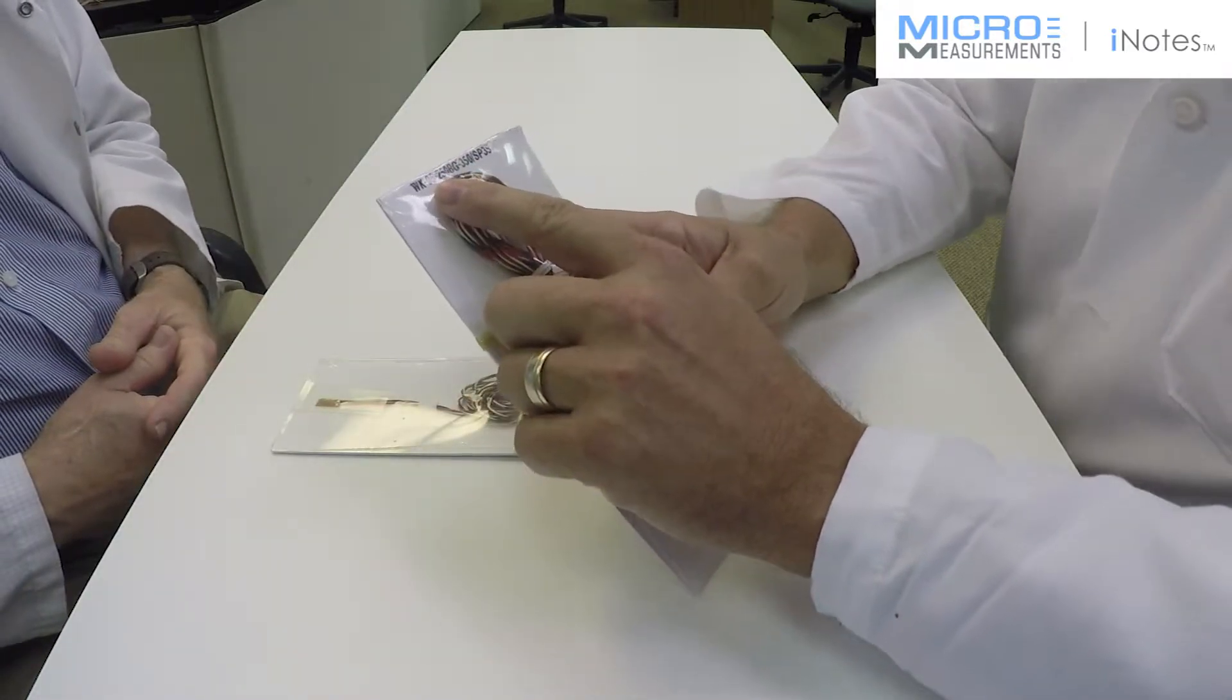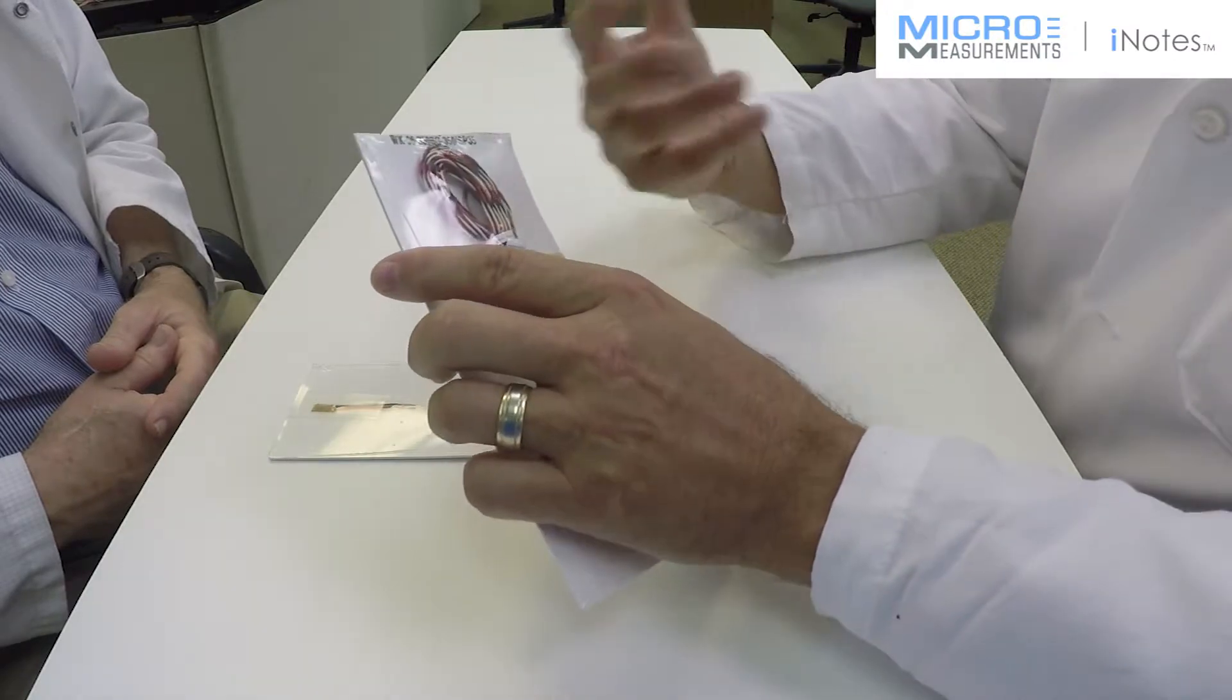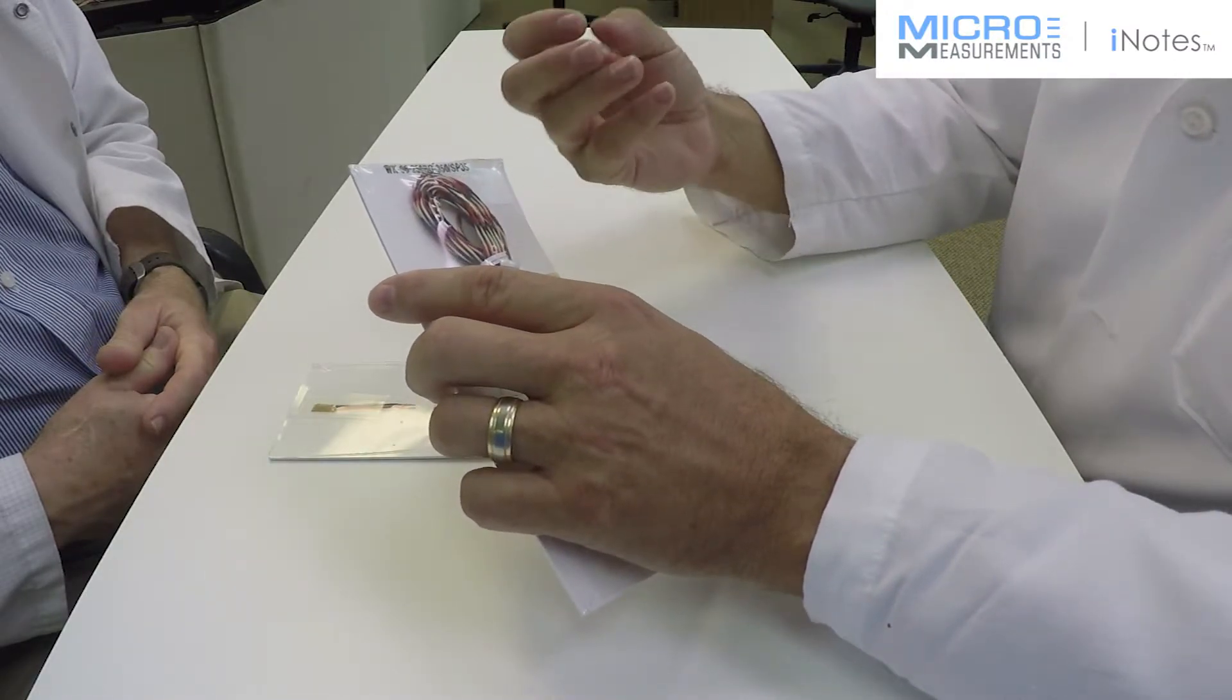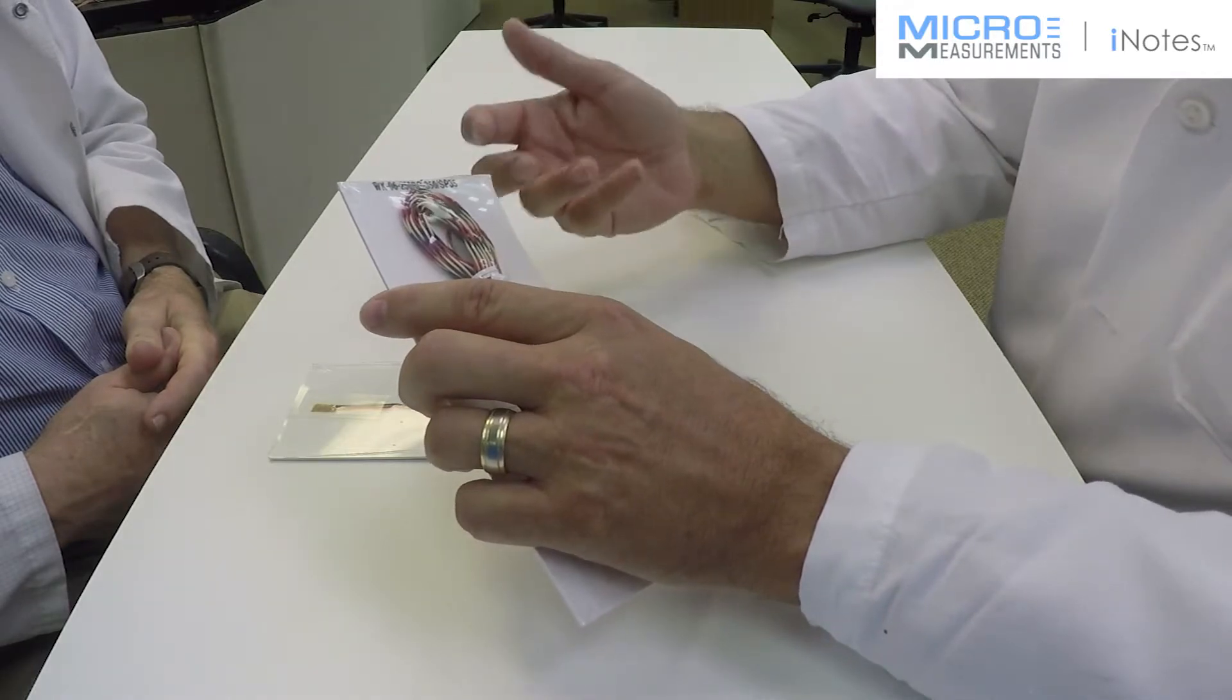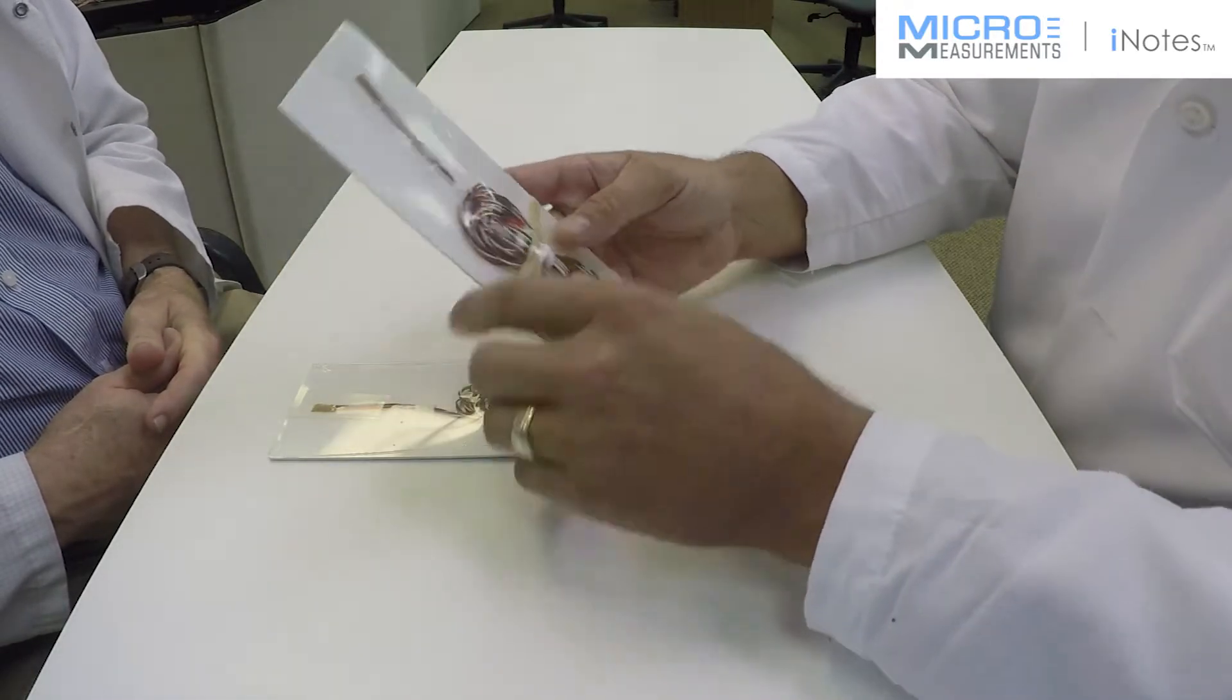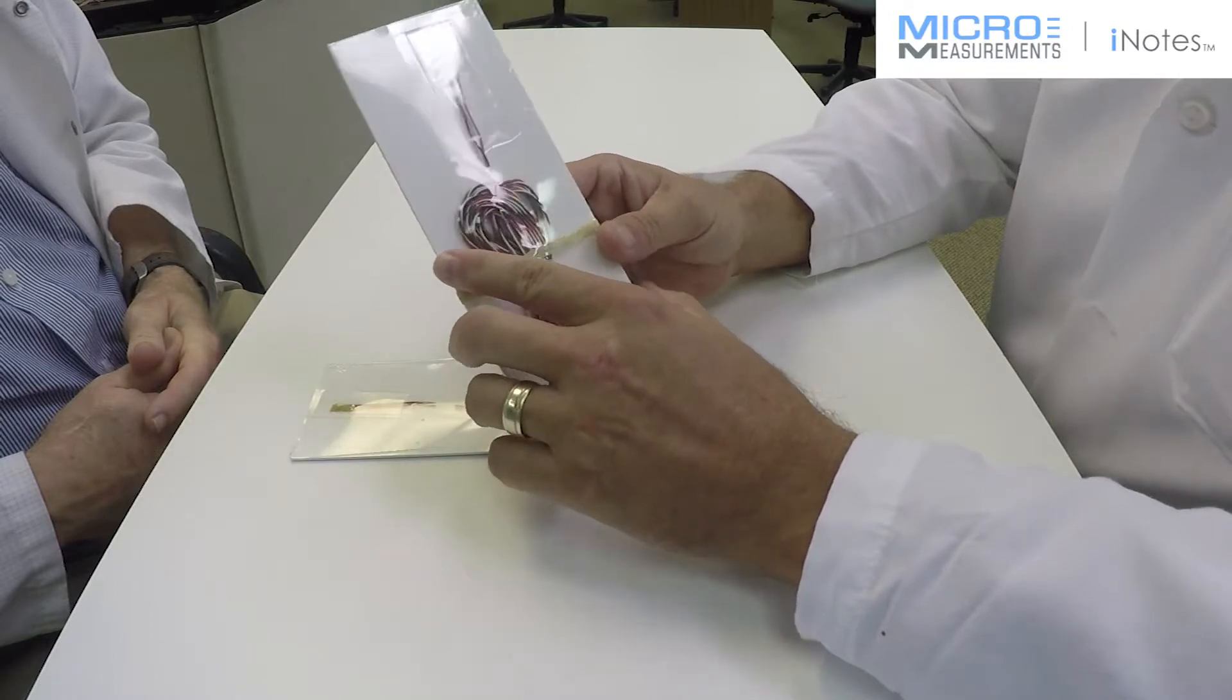When you take a WK series gauge, they have a glass epoxy phenolic backing material and the Karma foil. And that's going to be rated to a higher temperature. So with this combination, you can push it right up to about 450 degrees Fahrenheit.